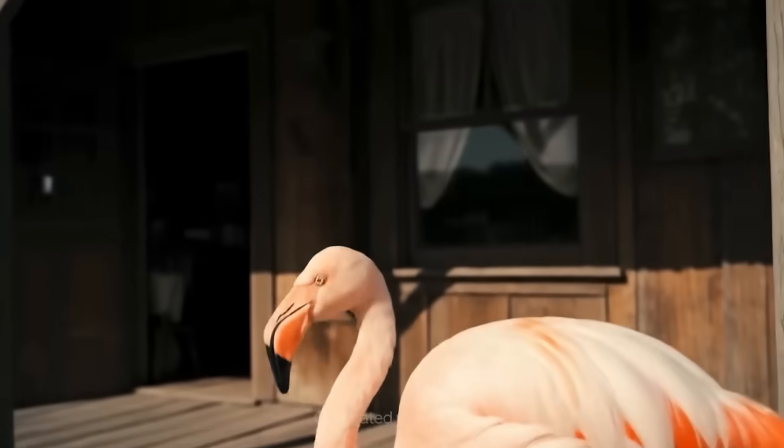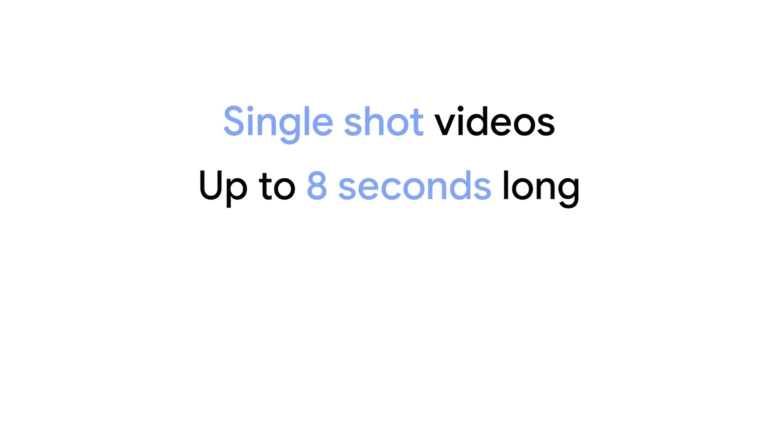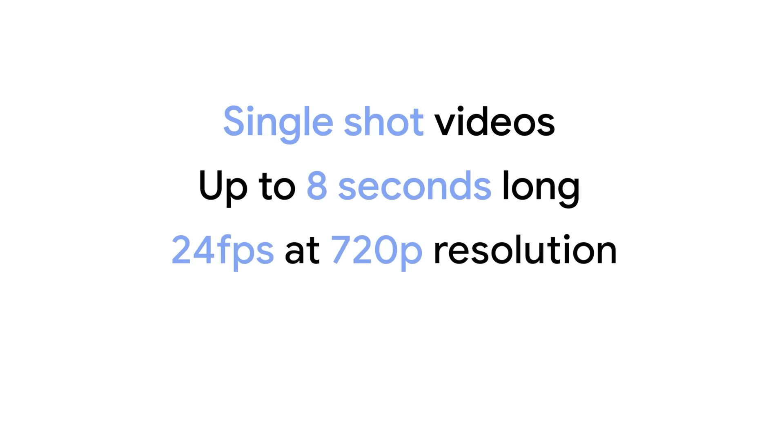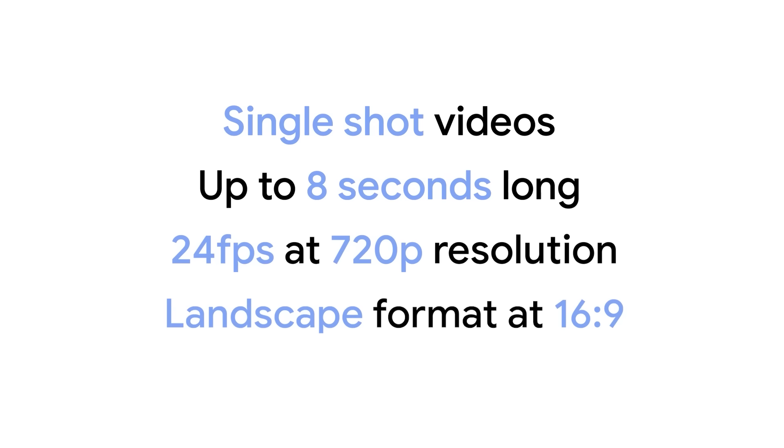Let's talk about what you're getting out of the box right now. In this paid public preview, VO3 generates single shot clips up to eight seconds long at a crisp 24 frames per second in 720p resolution. The aspect ratio supported for this preview is landscape, 1280 by 720 at 16 by 9. From a performance perspective, VO3 is designed to be affordable for serving at scale, with cost and latency roughly similar to VO2. For an eight second video, you can expect a generation time of around 60 seconds.